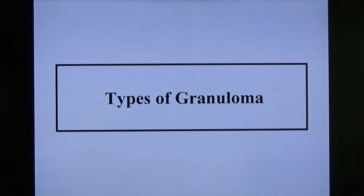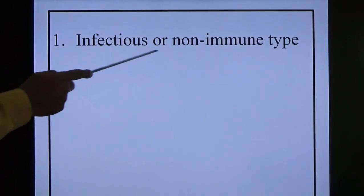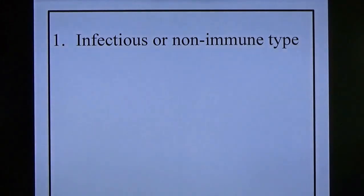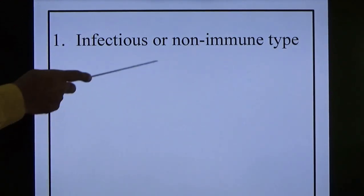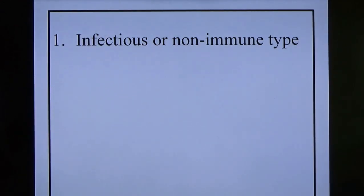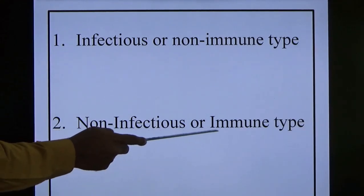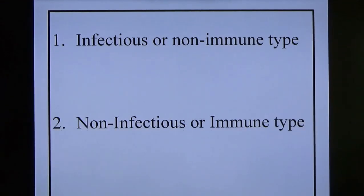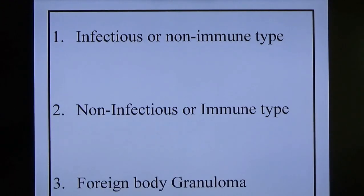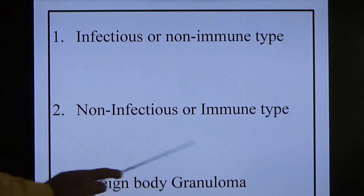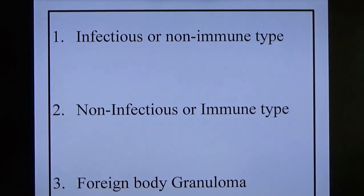There are three types of granuloma. Number one is infectious or non-immune type — examples are tuberculosis and leprosy. Number two is non-infectious or immune type — examples are sarcoidosis and silicosis. Third one is foreign body granuloma. That is all about chronic inflammation.